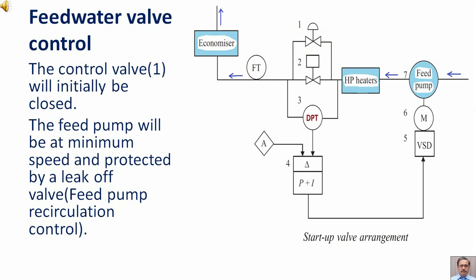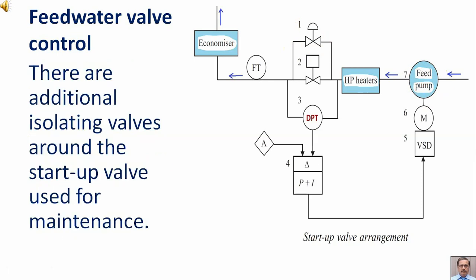The control valve first item will initially be closed. The feed pump will be at minimum speed and protected by a leak off valve, i.e., feed pump recirculation control. There are additional isolating valves around the startup valve used for maintenance.